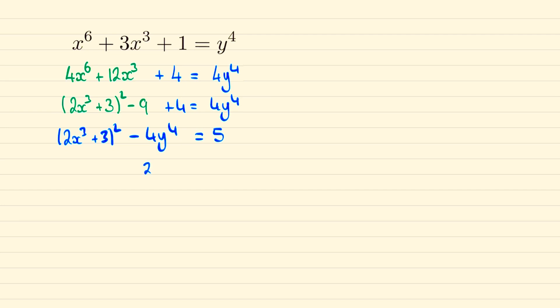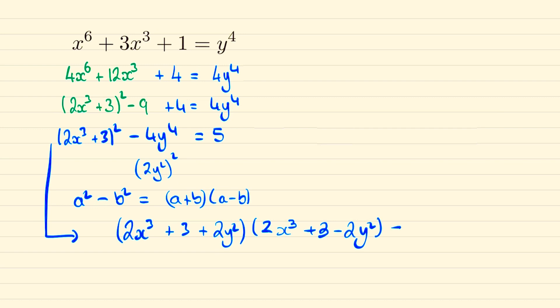4y⁴ is the same as (2y²)², and the difference of two squares factorizes as (a + b)(a - b). So this expression factorizes as (2x³ + 3 + 2y²)(2x³ + 3 - 2y²) = 5.